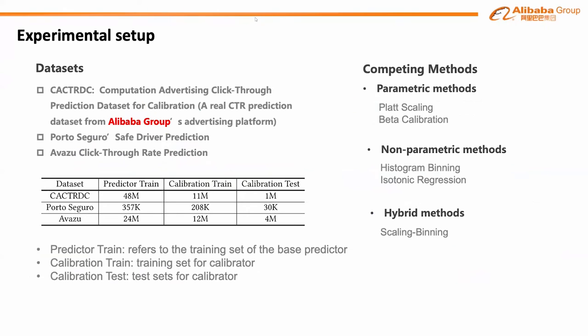We conduct both offline and online experiments to verify the effectiveness of our method and its impact on real-world applications. For the offline experiment, we dump impression and click logs from our commercial deployed online display advertising system, calling our industrial dataset CA-CTRDC. We additionally test our method on two public datasets to show its generality. We compare our MBCT model against the following state-of-the-art baselines: Platt scaling, beta calibration, histogram binning, isotonic regression, and the combination of scaling and binning.